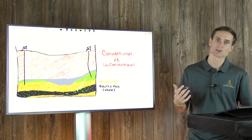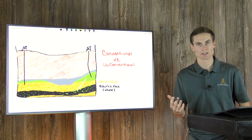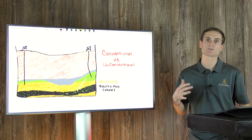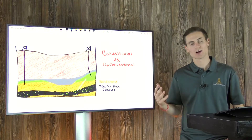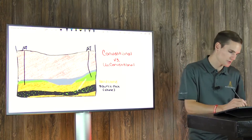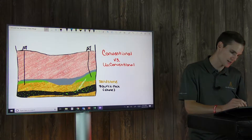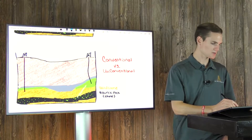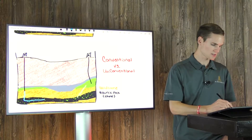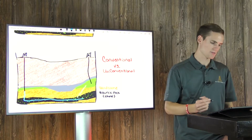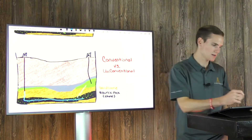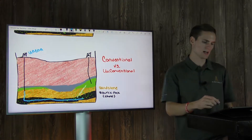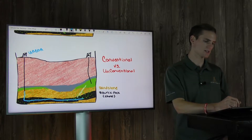For unconventional development, you want as much formation contact as possible, which is why we horizontally drill it and hydraulically fracture it — to induce a fracture network that allows the oil and gas trapped in those pore spaces to travel into the well far more easily. We drill horizontally into this reservoir and produce from it; that's the unconventional well, whereas the one on the right is the conventional well.